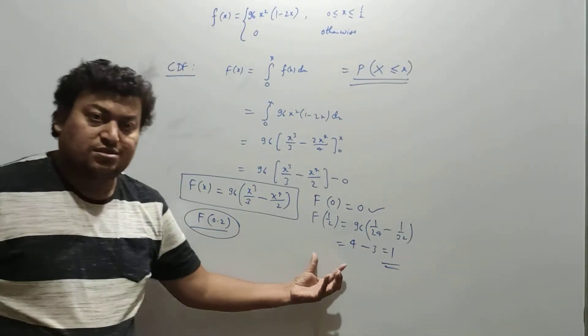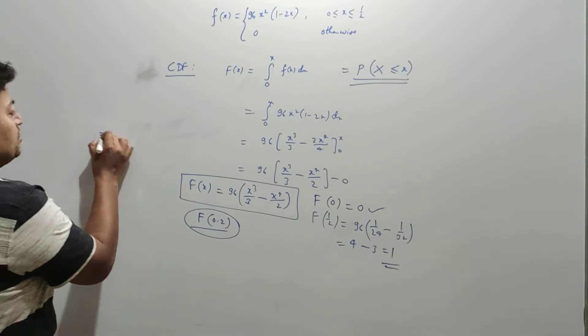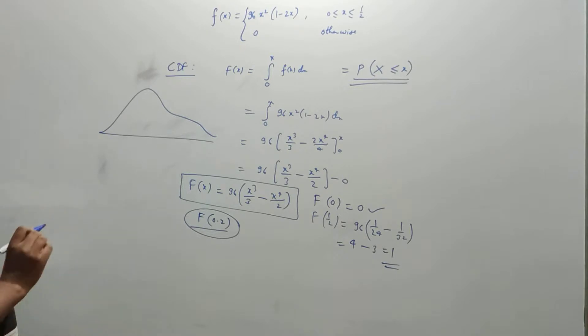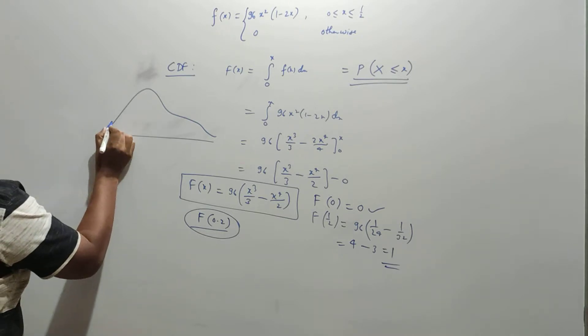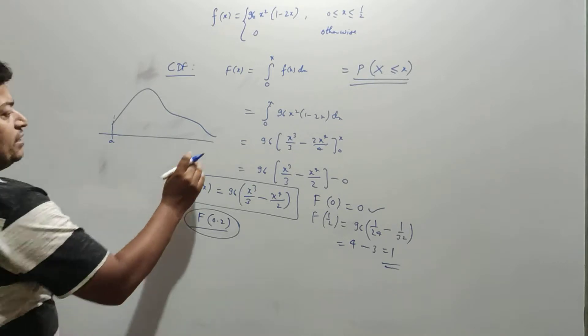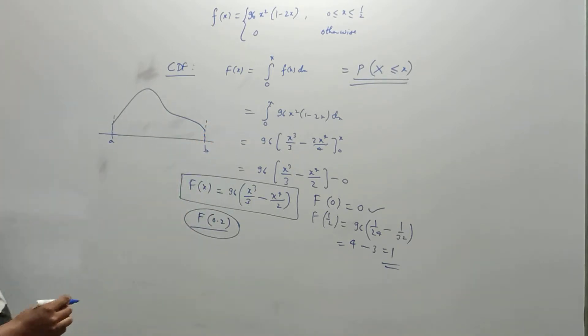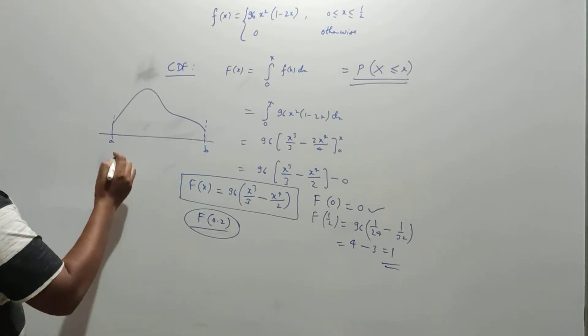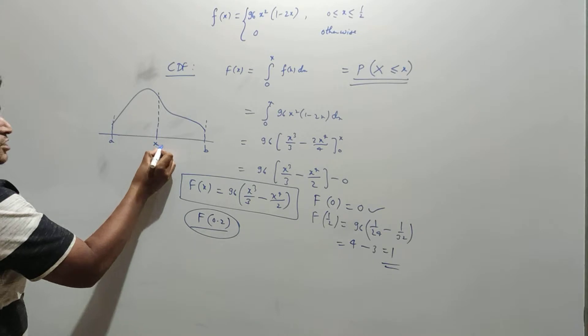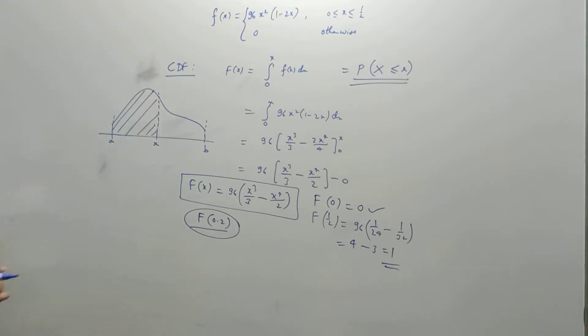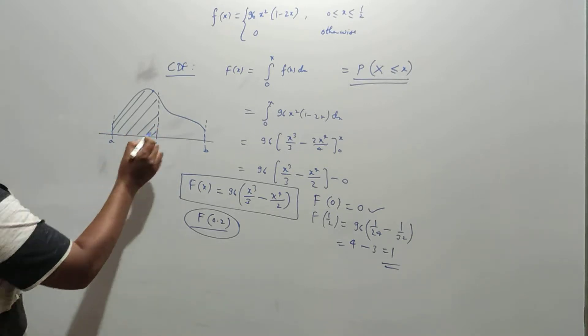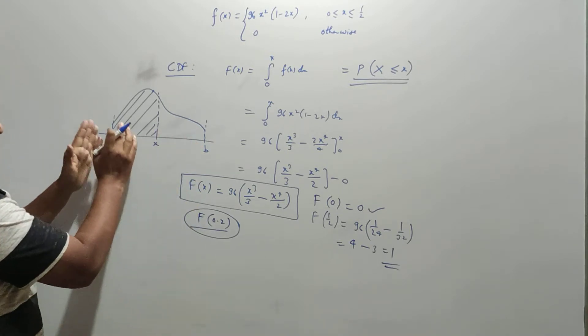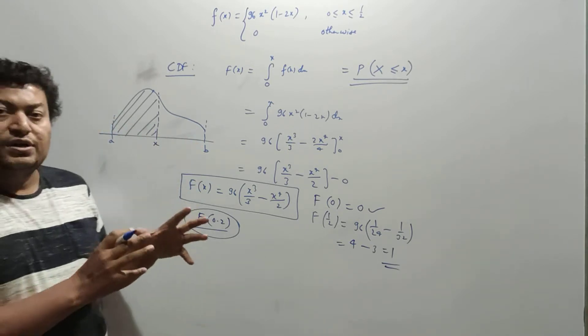That makes sense because CDF is the probability up to that point. Suppose you have some PDF like this, defined from point A to point B. CDF is the area under the PDF graph from the initial point to a general x. That's why when you put B in the CDF you get 1, and when you put A you get 0.